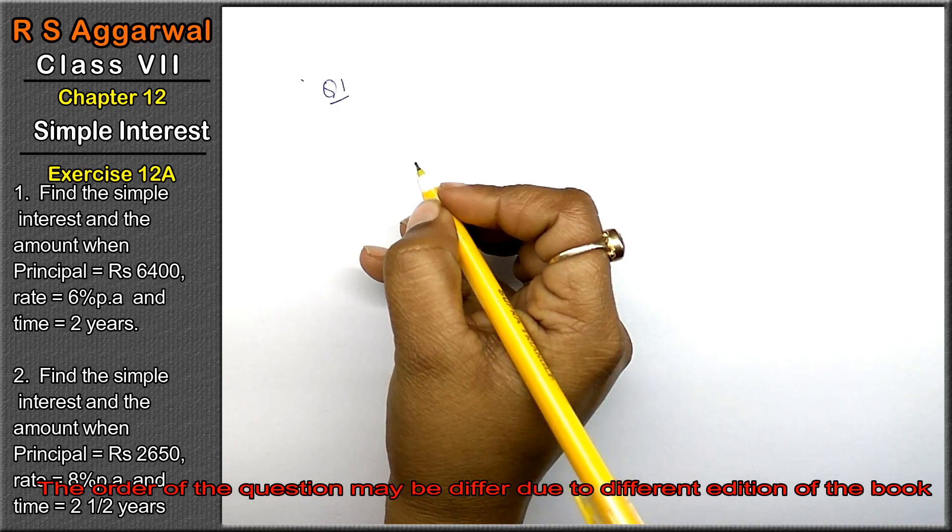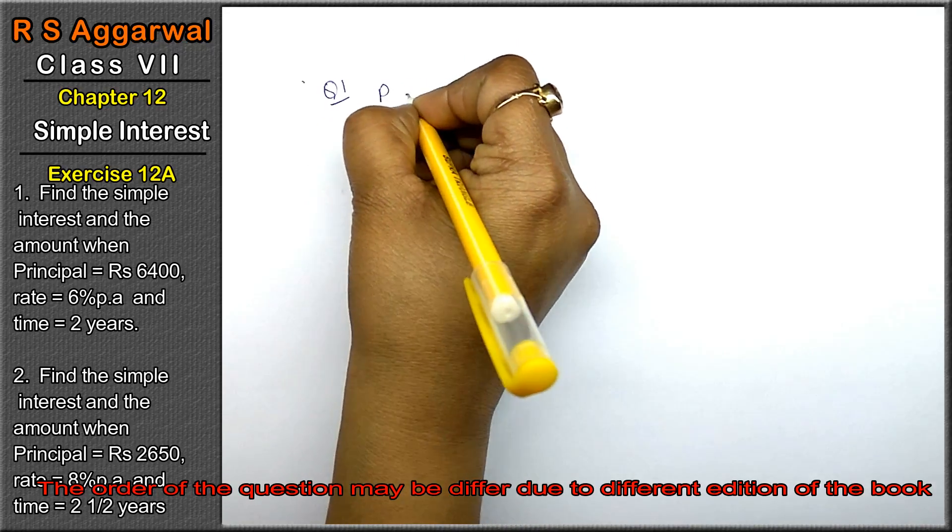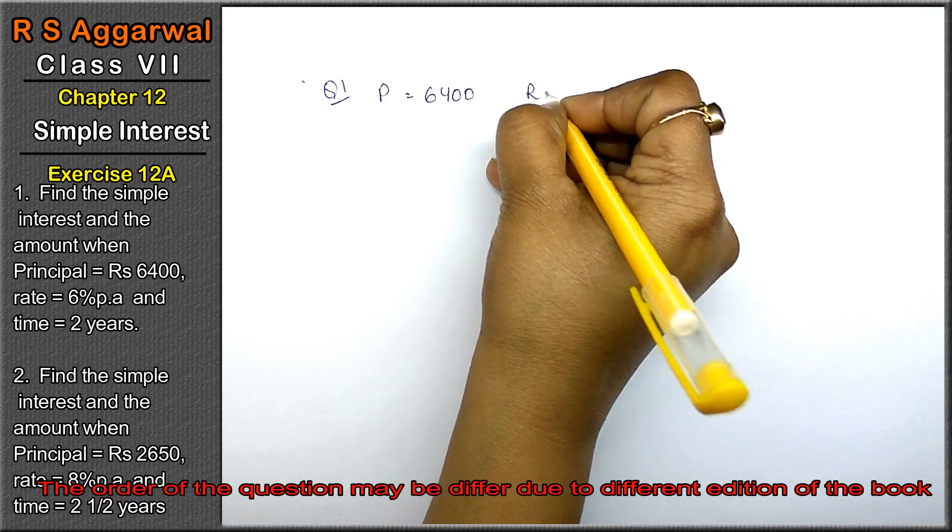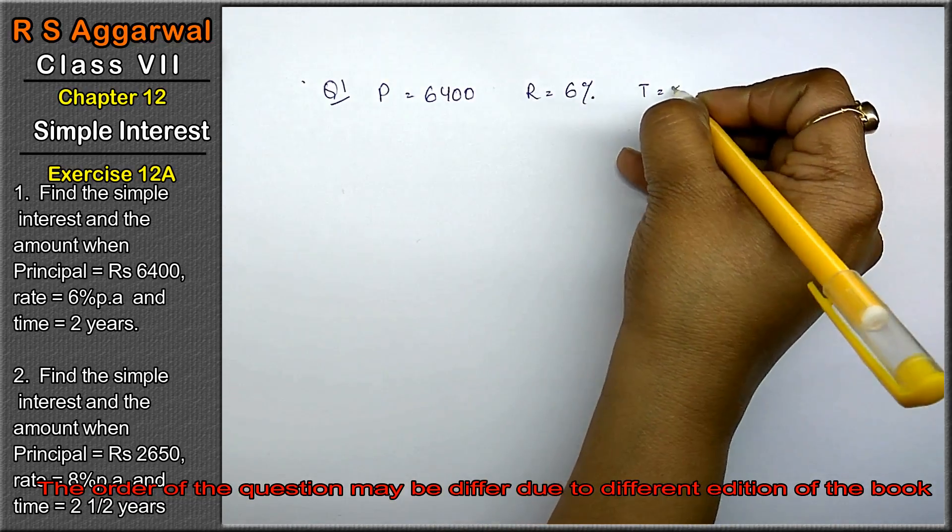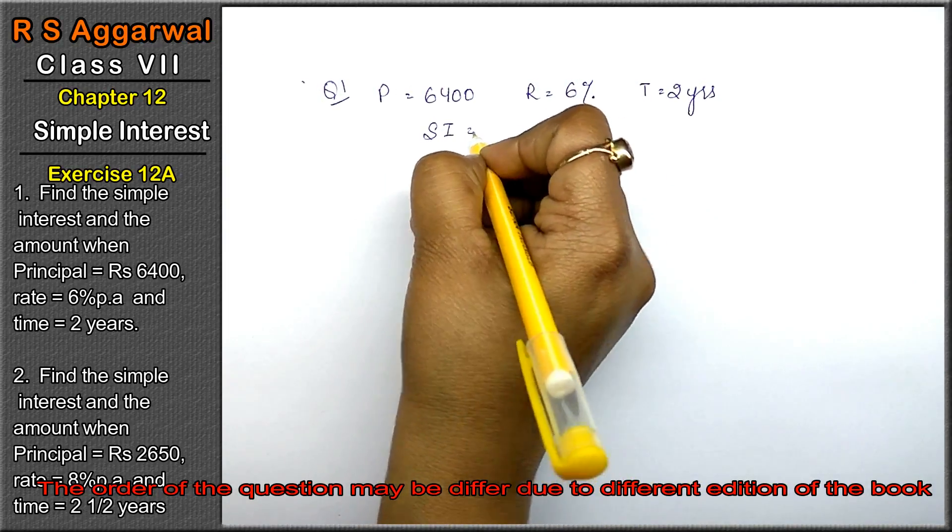Find the simple interest and the amount when principal is given to us P equals 6400, R equals 6%, and time equals 2 years.